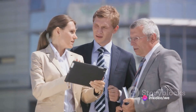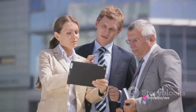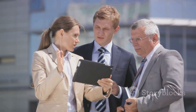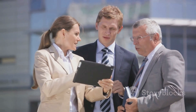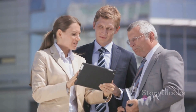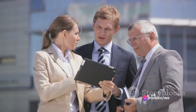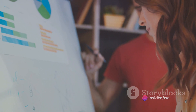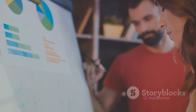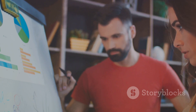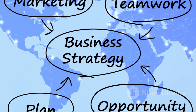First, the business description. This is where you define your business in clear, concise terms. It's not just about what you do, but why you do it. What problem are you solving? Who benefits from your solution? What sets you apart from the crowd? The business description is your chance to paint a picture of your enterprise, detailing its mission, vision, and core values. It's the roots of your business tree.